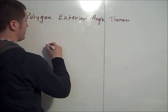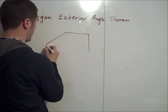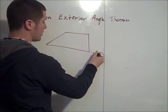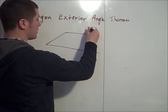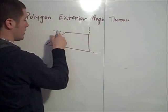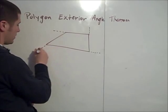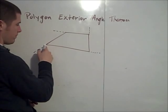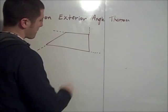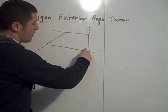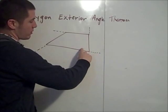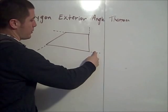For a quadrilateral with four interior angles, here is an exterior angle, there is an exterior angle, there is an exterior angle, and there is an exterior angle. What we should notice is that the interior angle and the exterior angle are supplementary because they form a linear pair.